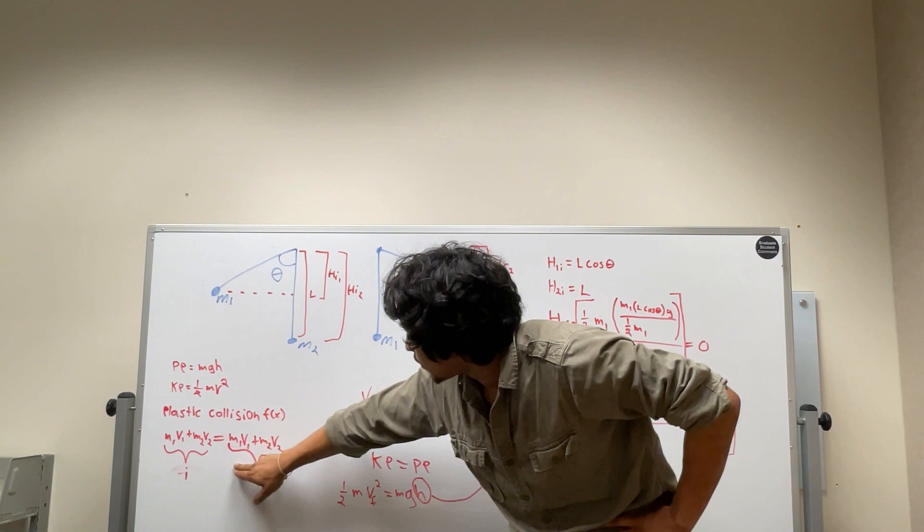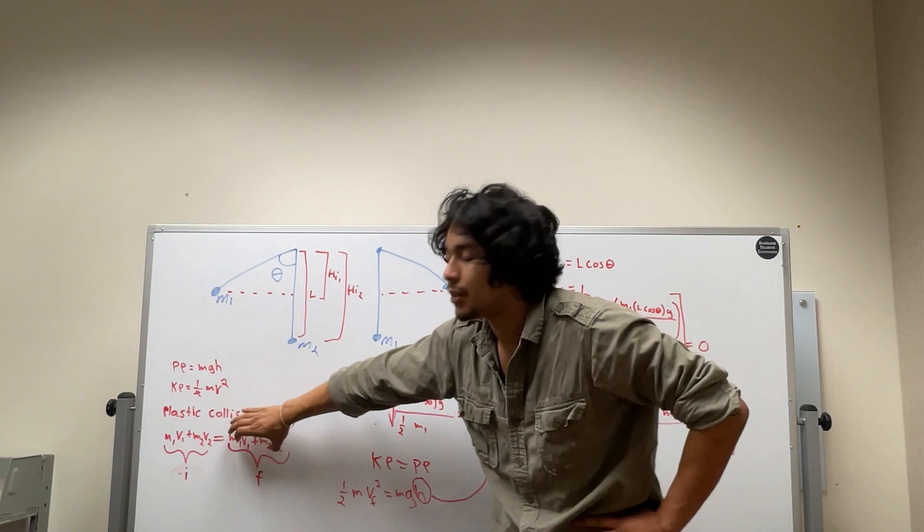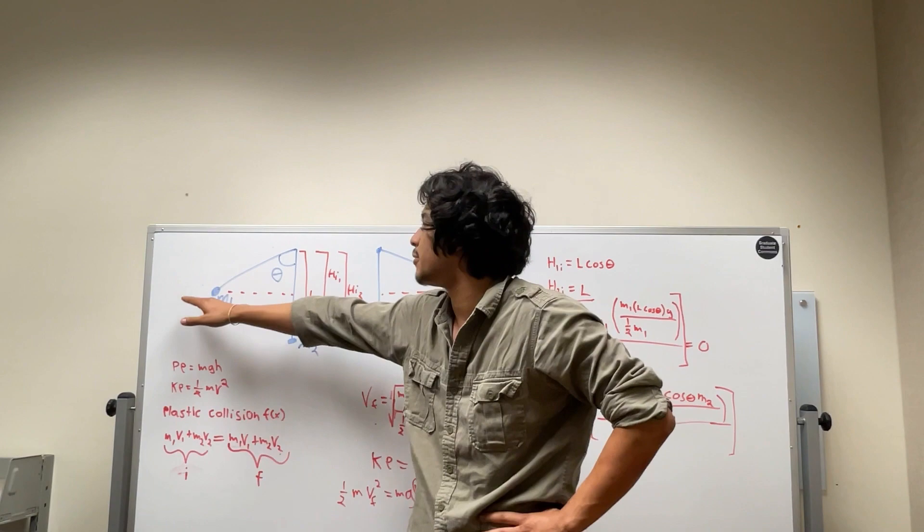what we'll end up getting is that our momentum for mass 1 will be a negative, the momentum for mass 2 will be a positive, and then they'll both cancel out because of conservation it becomes zero, which lines up with our initial momentum also being zero since they both start at rest.